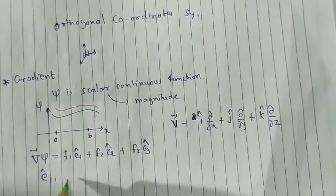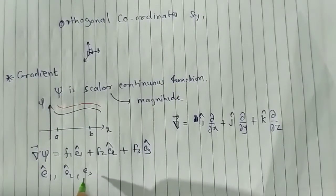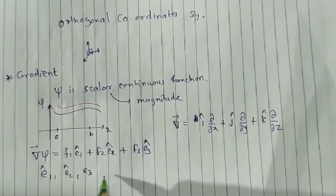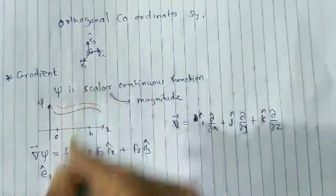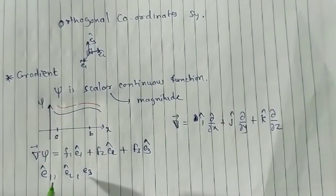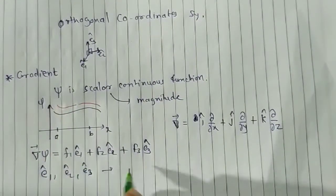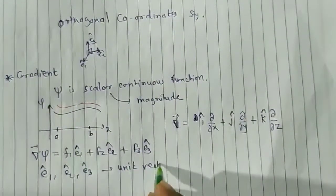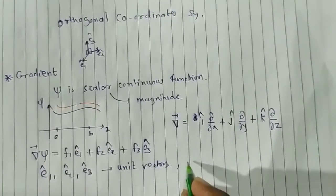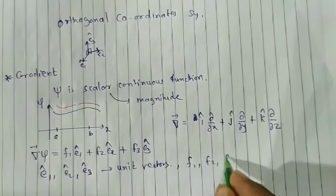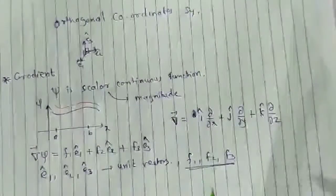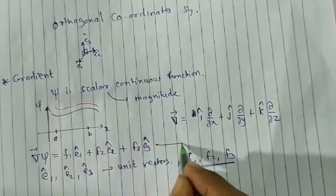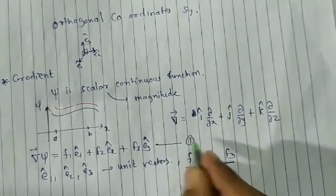The del bar (∇) operator is written as î·∂/∂x + ĵ·∂/∂y + k̂·∂/∂z. As I am putting an arrow on del, it is a vector operator. Here del bar is operating on ψ, and I am defining it equal to f1·ê1 + f2·ê2 + f3·ê3, where ê1, ê2, ê3 are unit vectors along the tangents drawn at the point of intersection of coordinate lines. I will call this equation 1. I am interested in finding f1, f2, and f3.